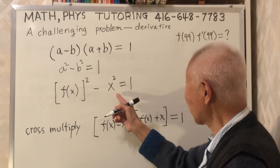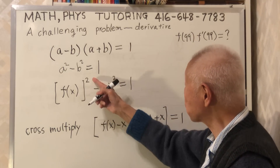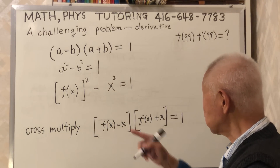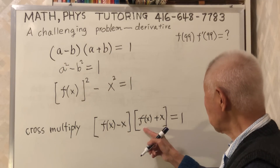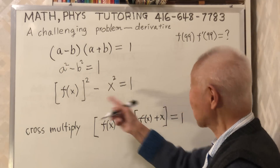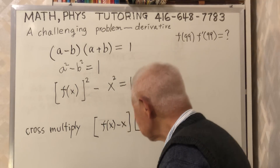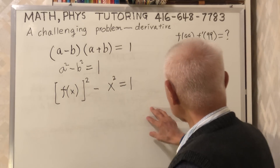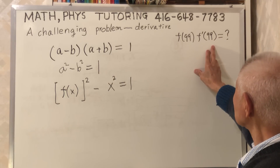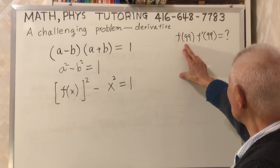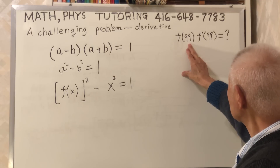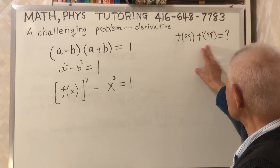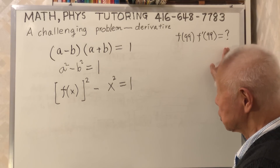So this is what I have: A squared minus B squared equals 1, because this is A, this is B, so A minus B times A plus B gives us that result. Don't forget — I want to find the function when x is 99 times the derivative of the function when x is also 99.